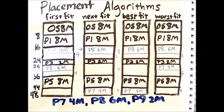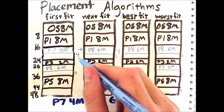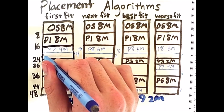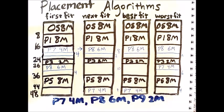We will now place process 9. This request only requires 2 megabytes. First fit will go through memory from the top as usual, and once it sees this 4 megabyte slot, it immediately fills it with process 9.